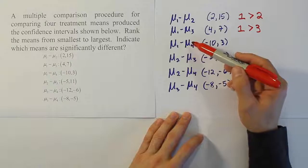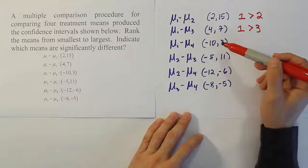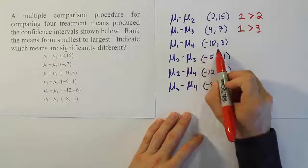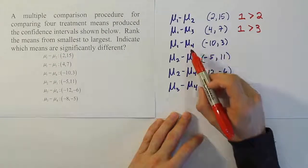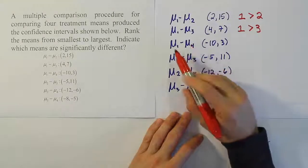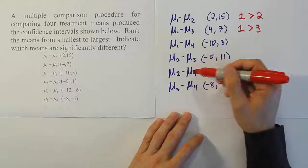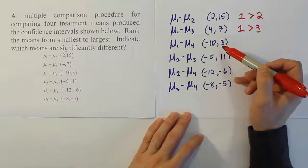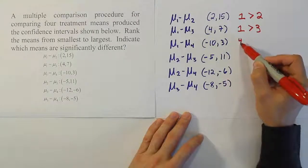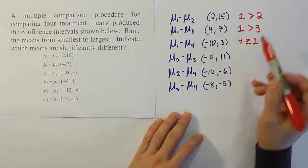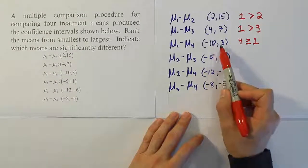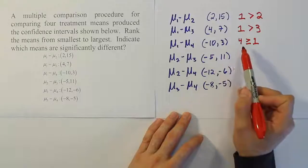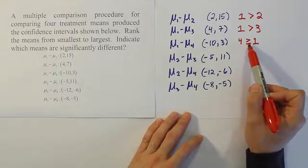For mean 1 minus mean 4, the result is negative and positive, meaning they're not significantly different. However, the interval is more negative than positive — the distance from negative 10 to 0 is greater than from 0 to 3. Since when the interval is negative the second mean is bigger, and it's more negative than positive, mean 4 had the bigger sample mean. But it's not significantly bigger, so we write 4 is greater than or equal to 1, allowing for the possibility they are the same.